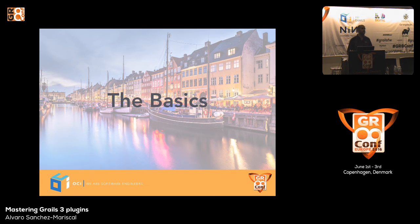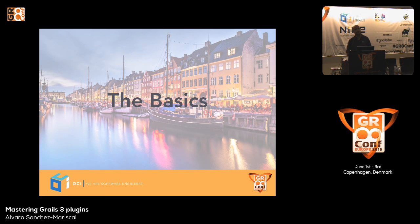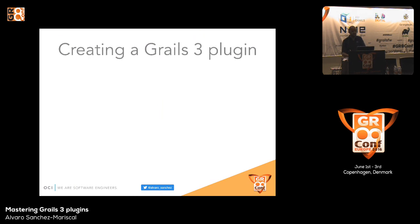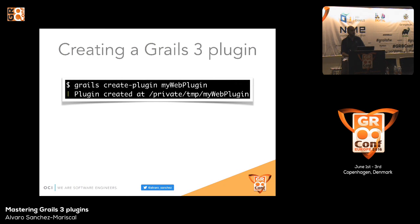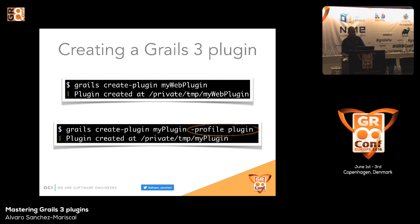What I'll tell you is a set of tips and tricks you need to know, especially what is different from Grails 2 plugins. How many of you have written a Grails plugin ever? And out of those, how many have done a Grails 3 plugin? Only three people, and one is Jeff so he doesn't count. The basics: how you create a Grails 3 plugin is very simple — you use the grails create-plugin command, same as before. There are two ways: you can create the plugin without specifying anything, or you can specify the plugin profile.